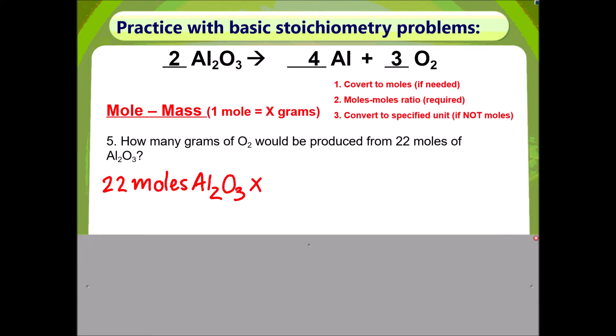This problem will deal with mole-to-mass. Question number 5: how many grams of oxygen would be produced from 22 moles of aluminum oxide?